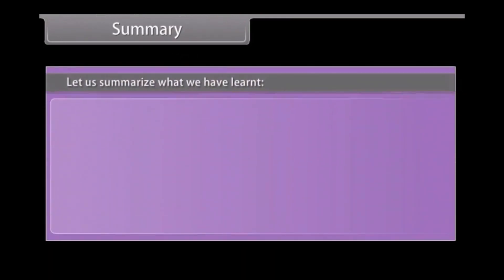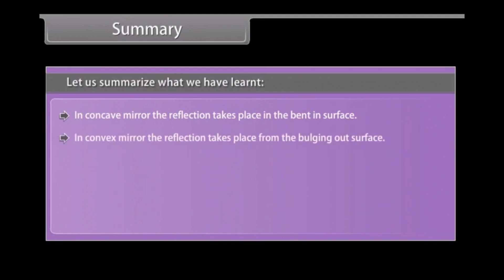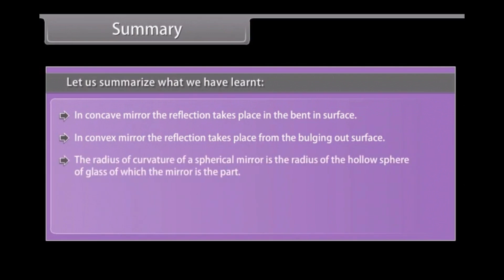Summary: In a concave mirror, reflection takes place at the bent-in surface. In a convex mirror, reflection takes place from the bulging-out surface. The radius of curvature of a spherical mirror is the radius of the hollow sphere of glass of which the mirror is a part.